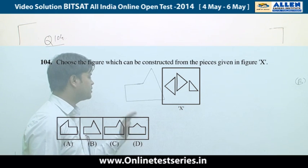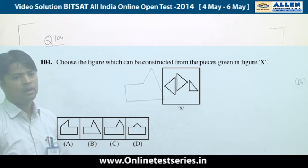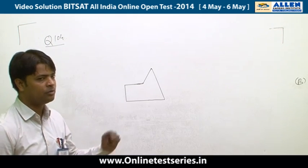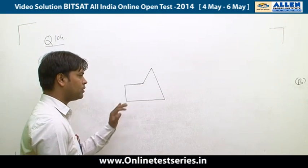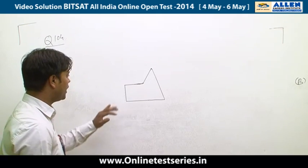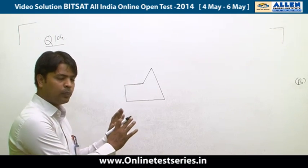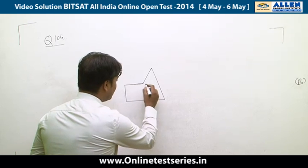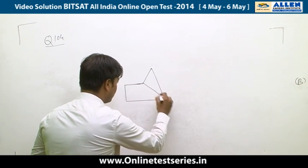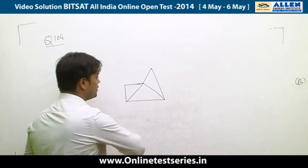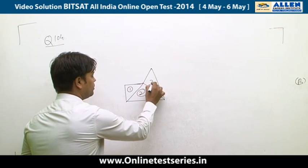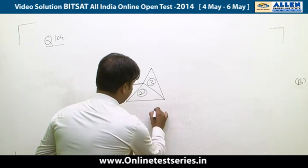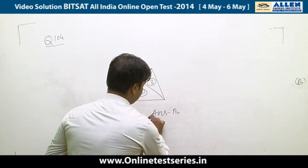Question 104 is from figure formation. We are given three pieces and must formulate a figure. Considering option B, this is the only figure that can be formulated with these three pieces — triangle one, two, and three arranged in a particular way. So the answer is B.